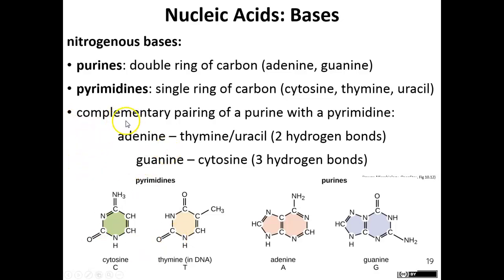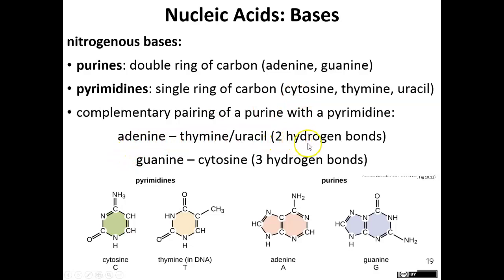The bases complementary pair to each other, and a purine always pairs with a pyrimidine. Adenine always binds with thymine or uracil depending on whether you're looking at DNA or RNA, and guanine always binds with cytosine. Between adenine and thymine there are two hydrogen bonds, and between guanine and cytosine there are three hydrogen bonds.